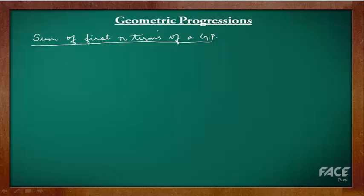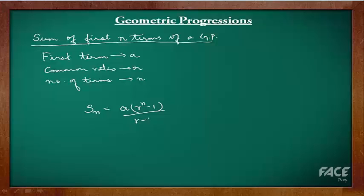Sum of first n terms of GP. Let A be the first term, R be the common ratio and n be the number of terms of geometric progression. Then, if Sn denotes the sum up to n terms of GP, the formula is given by: Sn equals A into R power n minus 1 divided by R minus 1.